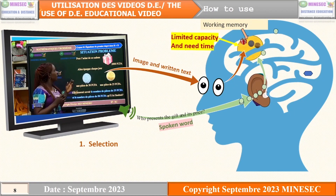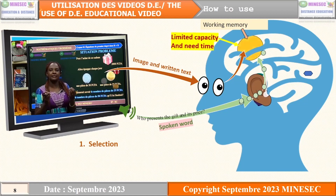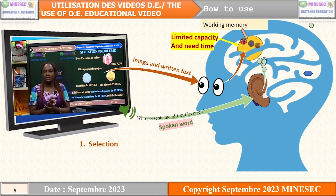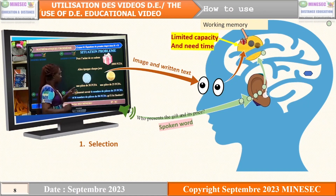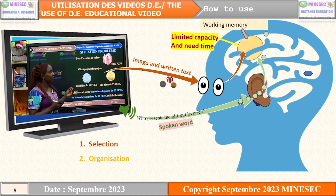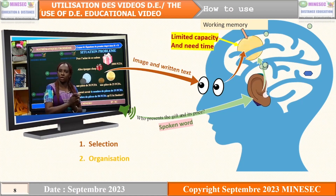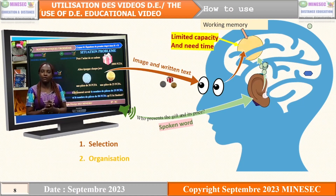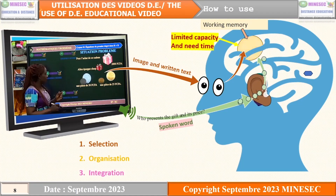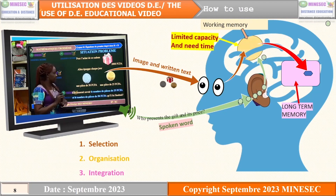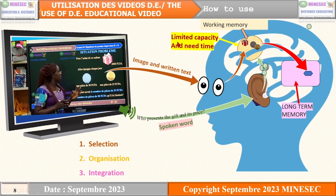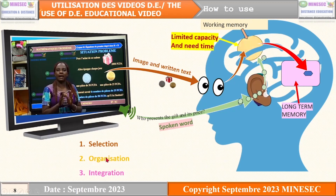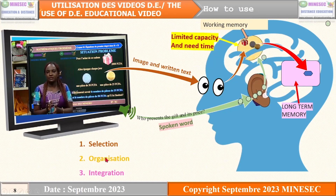After the selection is done and the information stored in the working memory, there is an imperative to organize all that has been received and send it to long-term memory for good storage. So, the first step is selection of information, the second step is organization of information, and the third step is integration.